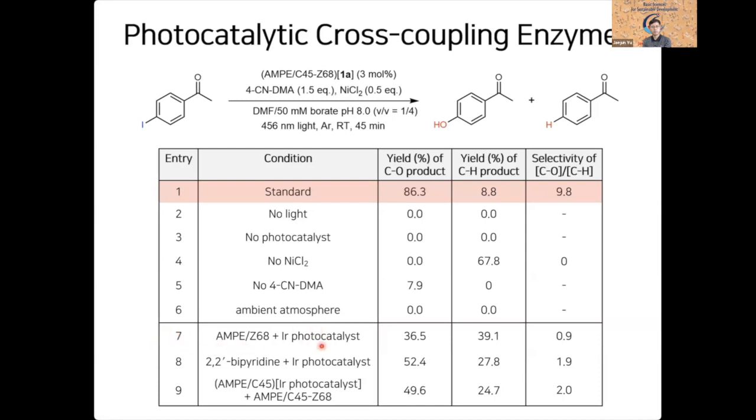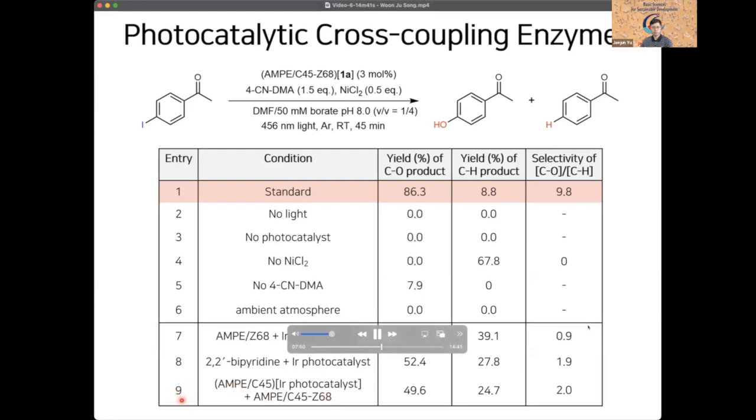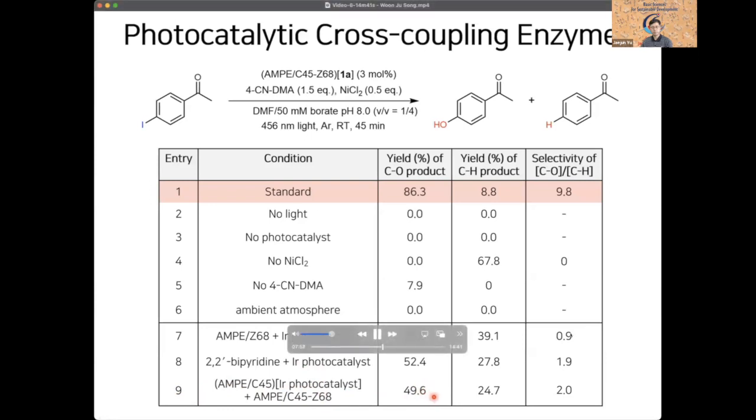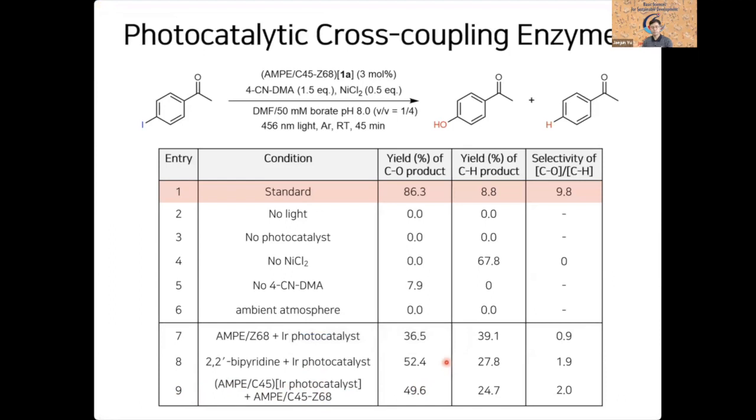Entry 7 indicates that the iridium catalyst was detached from our enzyme. And entry 8 indicates that both of the catalysts are detached from the protein, so basically it is the condition in the absence of protein. As you can see, the cross-coupling product yields were considerably decreased relative to the one shown with the standard conditions. And we can also attach each of the inorganic catalysts to the protein separately. That would be the case with entry 9. And you can again see that the cross-coupling products were generated in much less amount, indicating that the whole protein, this designed protein scaffold, is necessary to mediate efficient single-electron-mediated cross-coupling reaction.